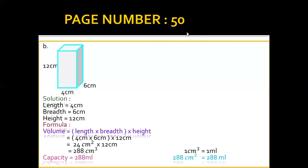Students, we have finished this meeting. In this session we covered the topic of cuboid — pages 48, 49, and 50. We learned about the shape of the cuboid, its elements, how to calculate volume, how to find an unknown fourth quantity when three measurements are given, and finally on page 50 how to convert centimeter cube into milliliters and the definition of capacity. Thank you.